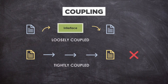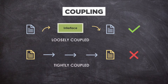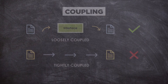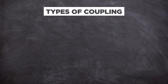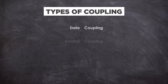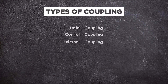Tight coupling can make other classes not work properly after a change. We should try to make our code as loosely coupled as possible. A good software will have low coupling.